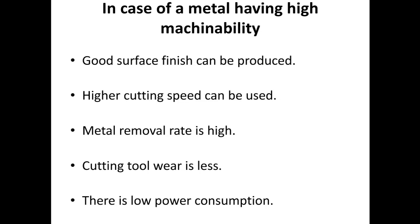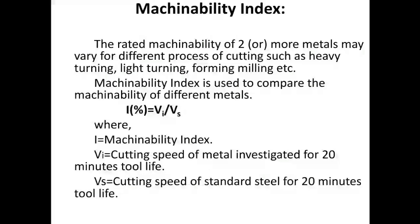The rated machinability of two or more metals may vary for different processes of cutting such as heavy turning, light turning, forming, milling, etc. The machinability index is used to compare the machinability of different metals. The formula is: I = VI / VS, where I is the machinability index, VI is the cutting speed of the metal being investigated for a 20-minute tool life, and VS is the cutting speed of standard steel for a 20-minute tool life.